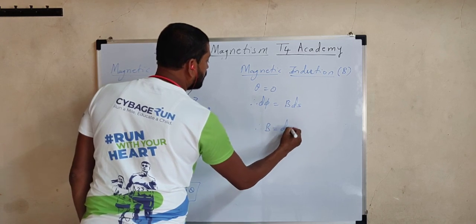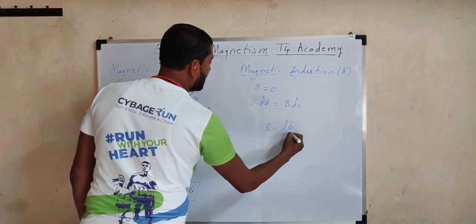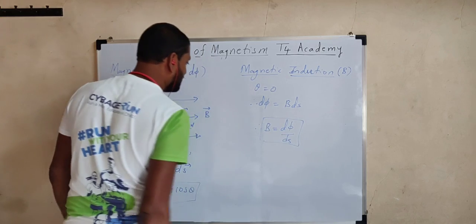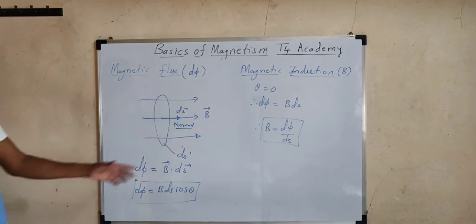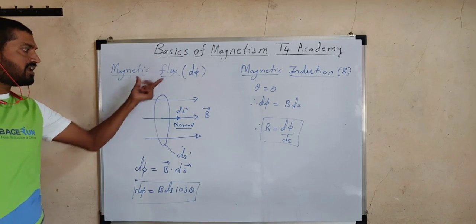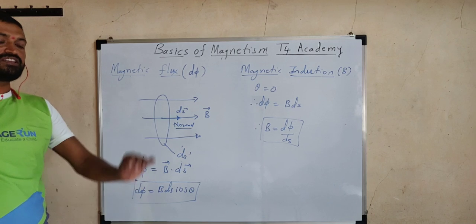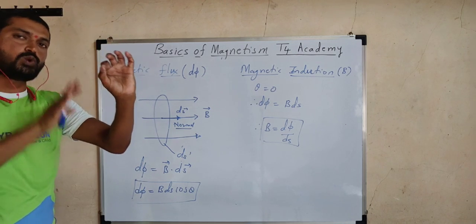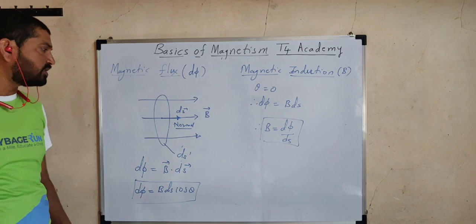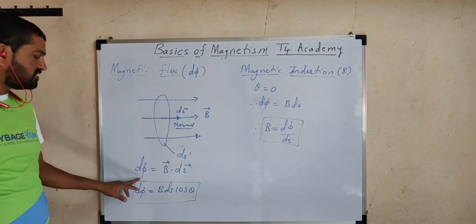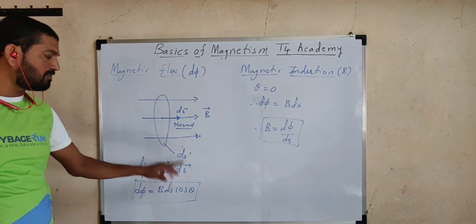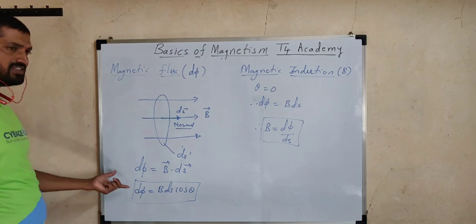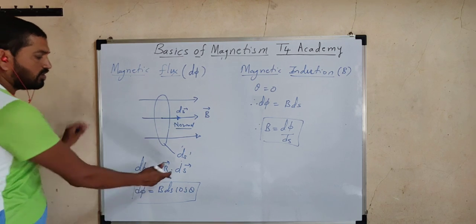Therefore, we can write B equals dΦ divided by dS, which helps us define the second term, magnetic induction. Once again, magnetic flux through a given area is defined as the total number of magnetic lines of force passing normally through it. The formula is dΦ equals B-bar dot dS-bar, or dΦ equals B dS cosθ. It is a scalar because it is a dot product.